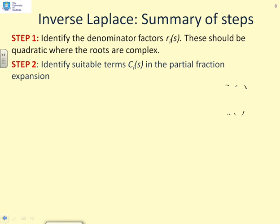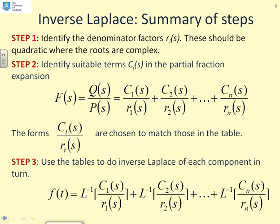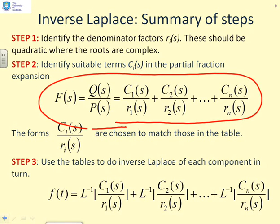Steps we won't do in this video but come later: once you've got the poles or the denominator factors, then you need to identify suitable terms c_i(s) so that you can write your transfer function as a partial fraction. Once you've got to that stage, the last bit, you just look at the table and do inverse Laplace directly on each of the terms in turn. This video is focusing on step 1, and we'll revisit step 2 and step 3 in the following videos.